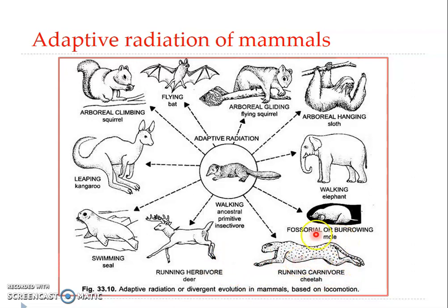The fourth group is the fossorial or burrowing type, which includes moles. They have modified their forelimbs for digging, but are poorly adapted for locomotion on the ground.